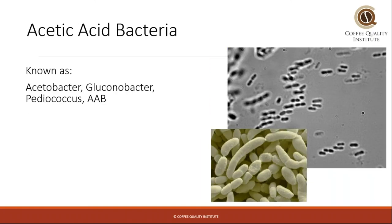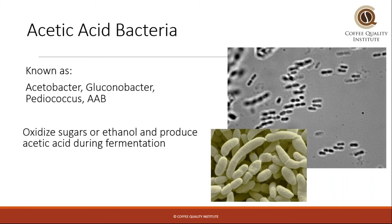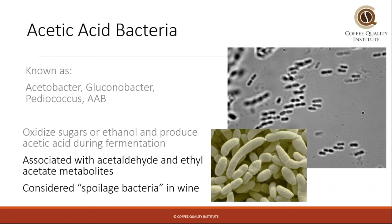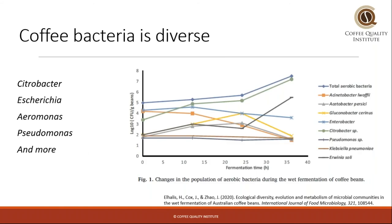Acetic acid bacteria is another big one that we know contributes to post-harvest processing. It's a big category of bacteria with lots of different genera involved. They all oxidize sugars or ethanol and produce acetic acid as their fermentation product. Some of these metabolites caused by the acetic acid bacteria — like acetaldehyde and ethyl acetate — are considered spoilage metabolites in the wine industry, but they are fruity character compounds.